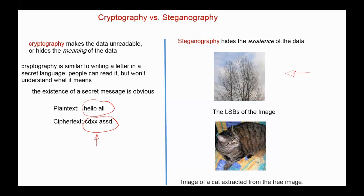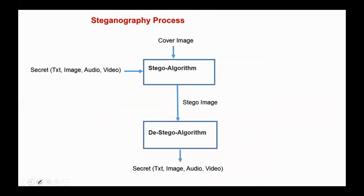Here we have an image of a tree. The least significant bits of this image store the stego text or the stego image — here, an image of a cat extracted from the tree image. In the steganography process, we have the secret text, image, audio, or video, and the cover image. The stego algorithm embeds the secret message into the cover image to obtain the stego image. At the receiving end, the stego algorithm extracts the secret message from the stego image.